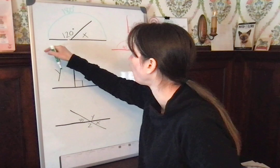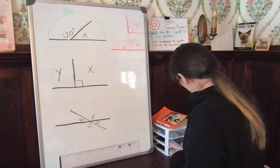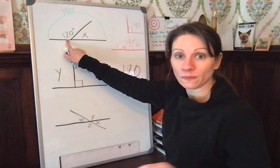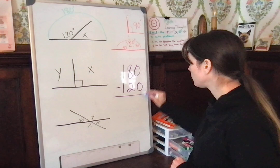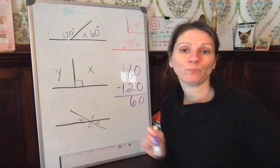So if you have 180, you already know that this is 120. So you could take 120 away from 180, and you are left with 60. Guess what? You just found out the degrees of that angle.